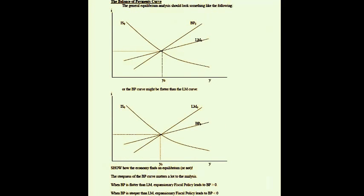The analysis is extremely interesting because we now have two positively sloped curves (LM and BP) and one negatively sloped curve (IS). The crux of the analysis is which of the two positively sloped curves is steeper. When the BP curve is steeper than the LM curve, expansionary fiscal policy leads to a balance of payments deficit. When the BP curve is flatter than the LM curve, expansionary fiscal policy leads to an improvement in the overall balance of payments. The steepness of the BP curve therefore matters greatly.